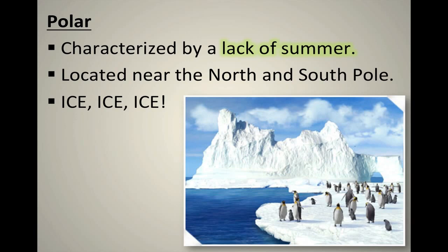You might ask, how is it dry with all that ice? Well, that ice has been there for years and years. It doesn't snow that much in polar regions — it has to receive at least 10 inches of rainfall or precipitation to not be considered dry, and polar regions for the most part don't get 10 inches of precipitation. So it's still dry. That frozen ice is simply there because it's so cold — it's not snowing all the time.